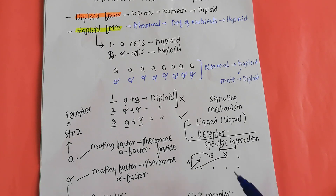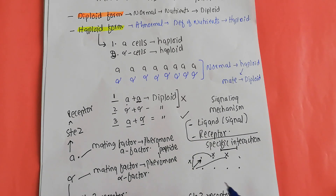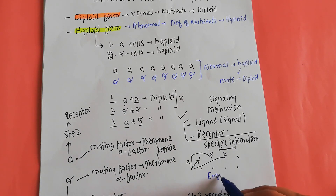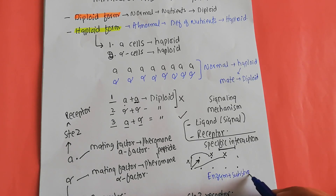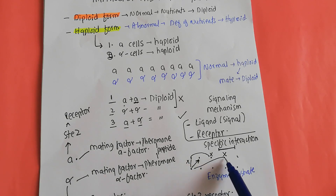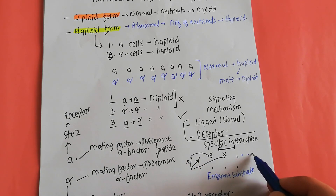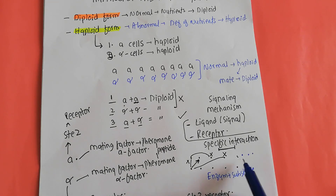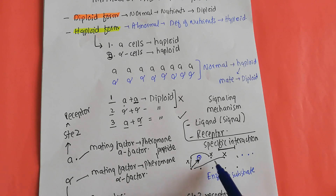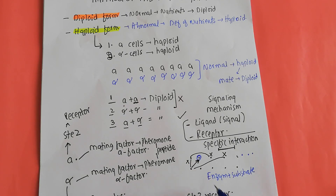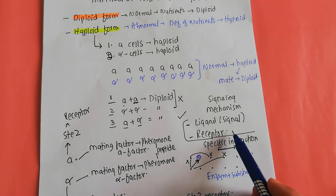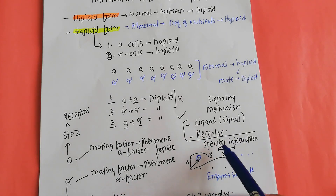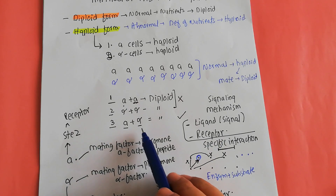This specific interaction of ligand and receptor is comparable to the enzyme-substrate interaction. In a cell, there are many substrates and many enzymes, but enzymes interact with only specific substrates — not all of them. Similarly, every substrate does not interact with every enzyme because enzyme-substrate interaction is very specific. The same applies here: a specific ligand interacts with a specific receptor, which is why only an A cell can interact with the alpha cell.